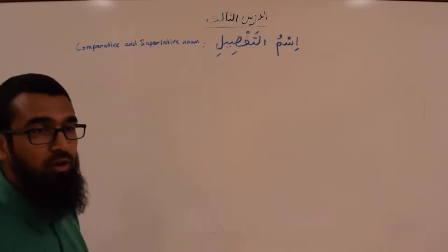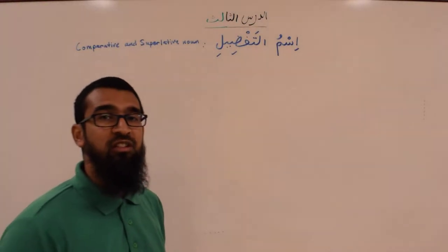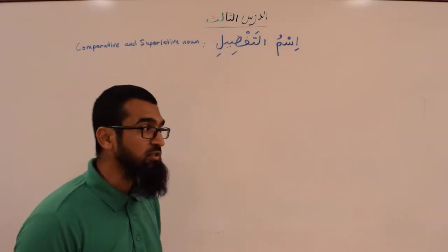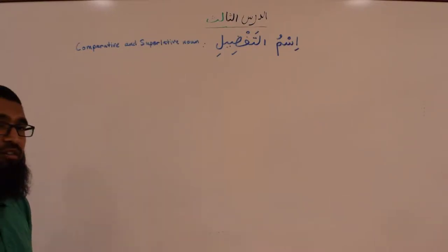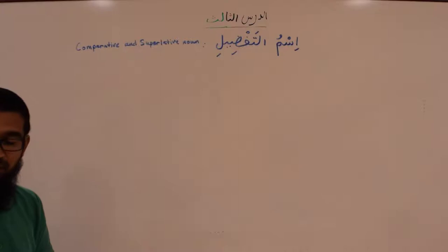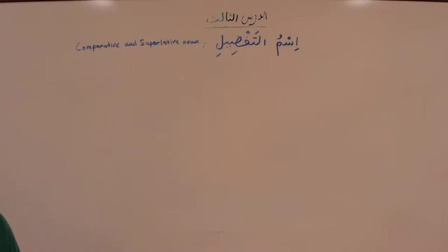The third concept of lesson three, a darsu thalith, is ismu tafdeel. So what is exactly ismu tafdeel? It translates as comparative or superlative noun. What is a comparative and a superlative noun? Like for instance, when we compare things.